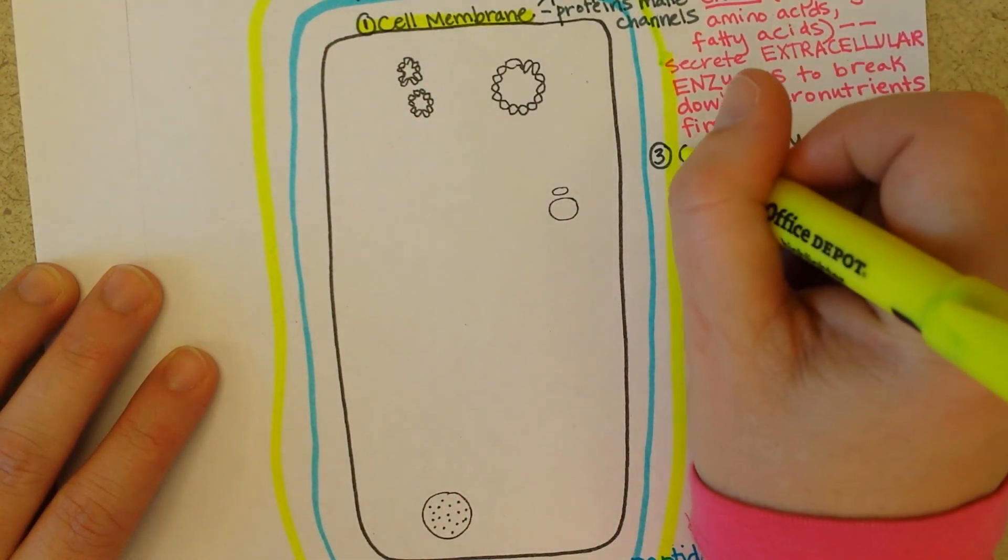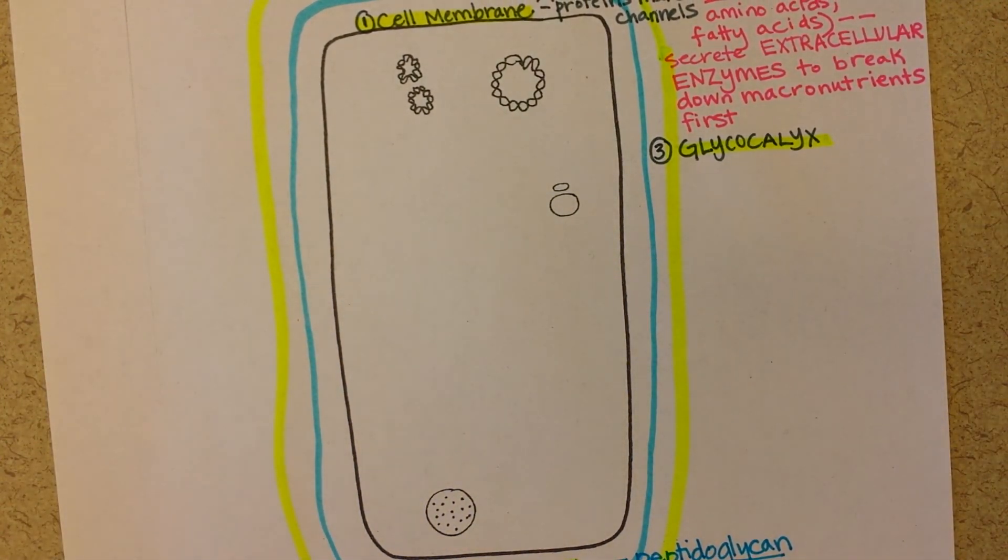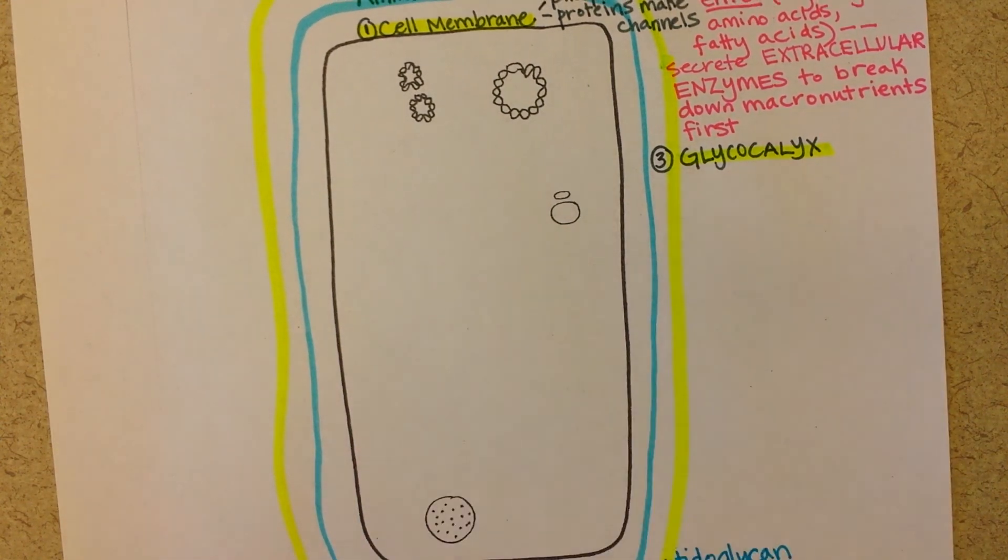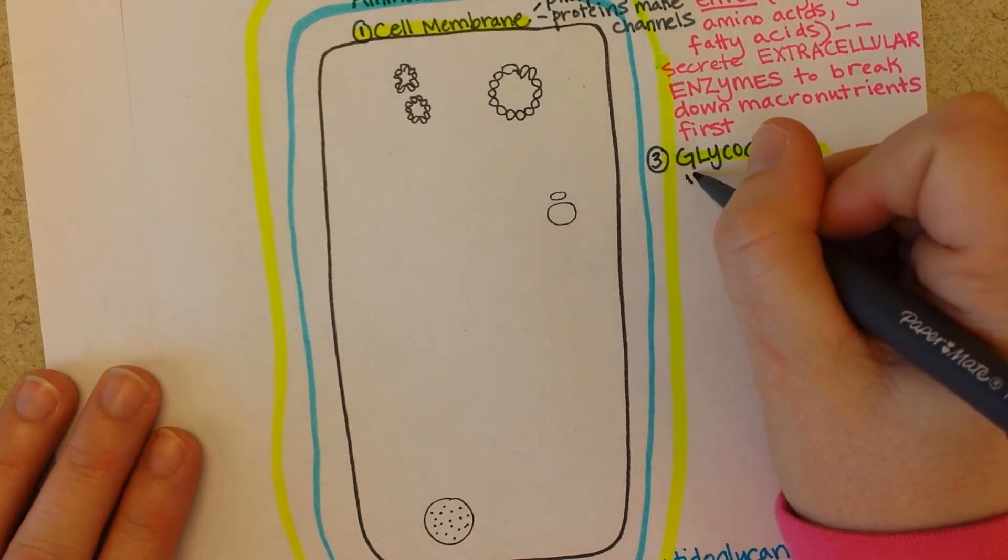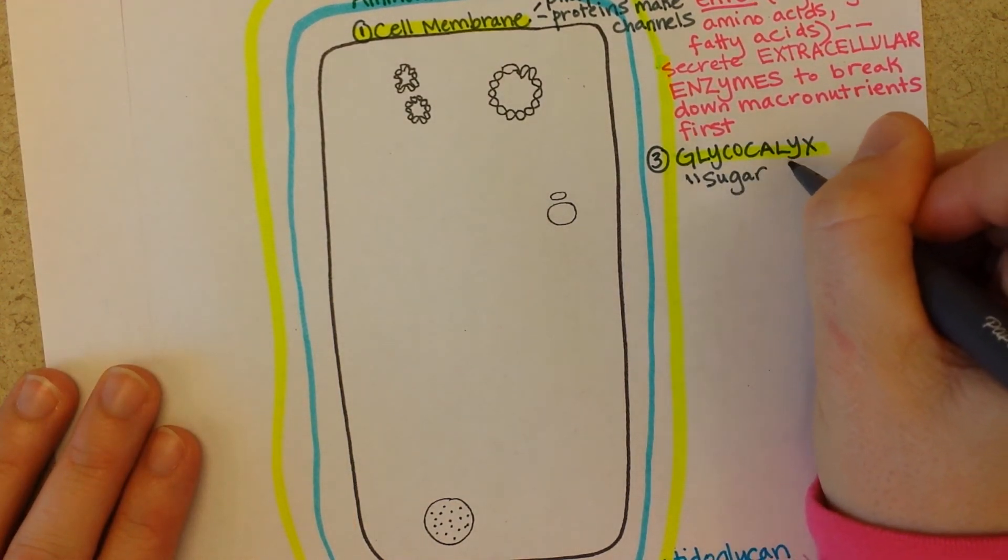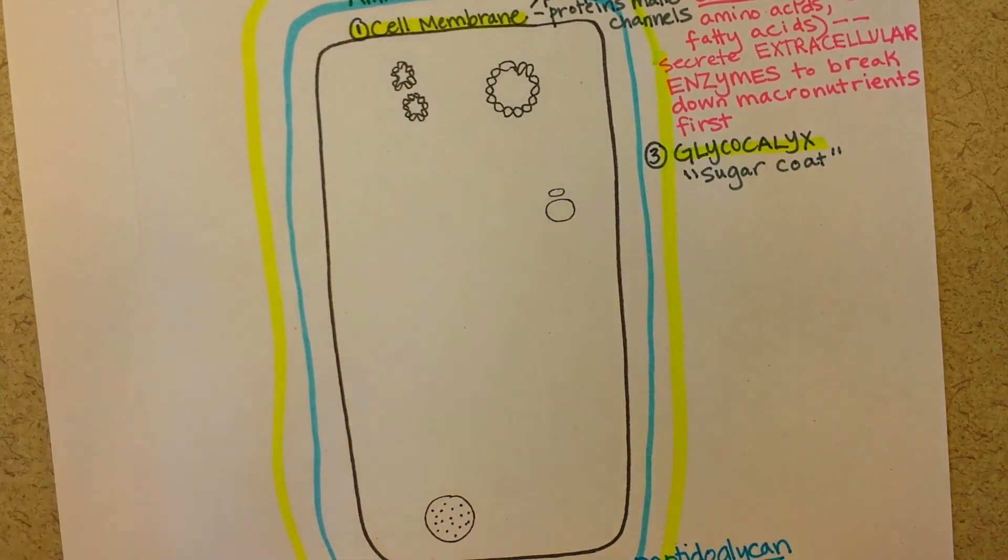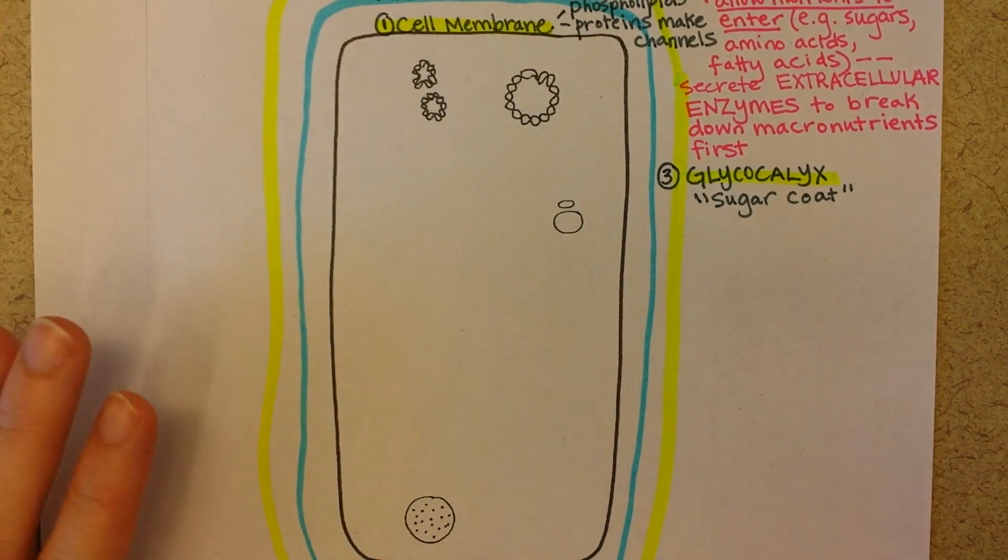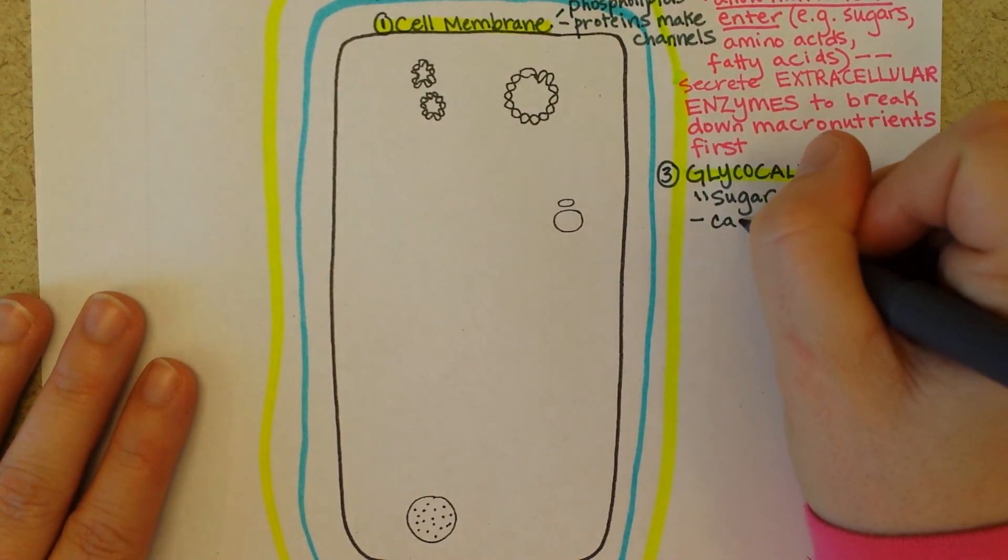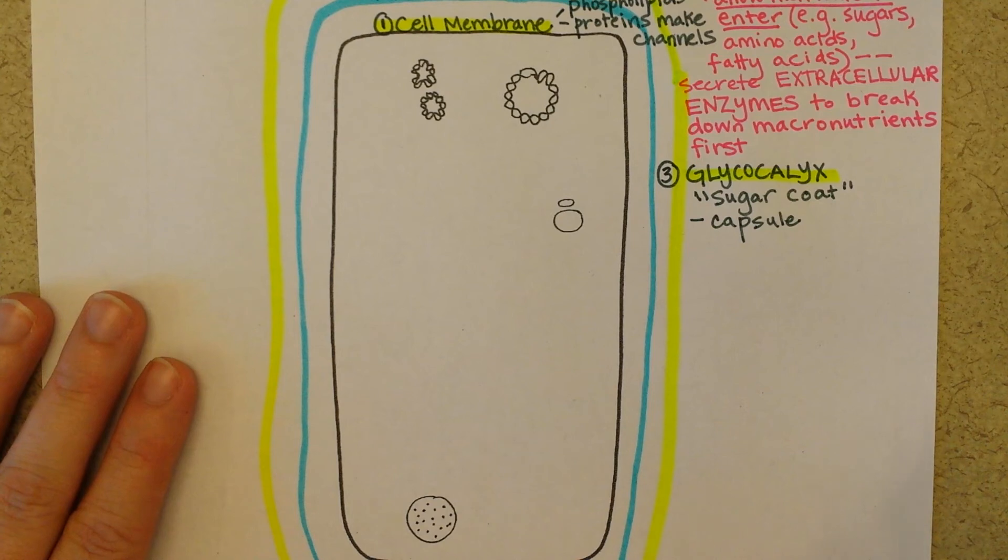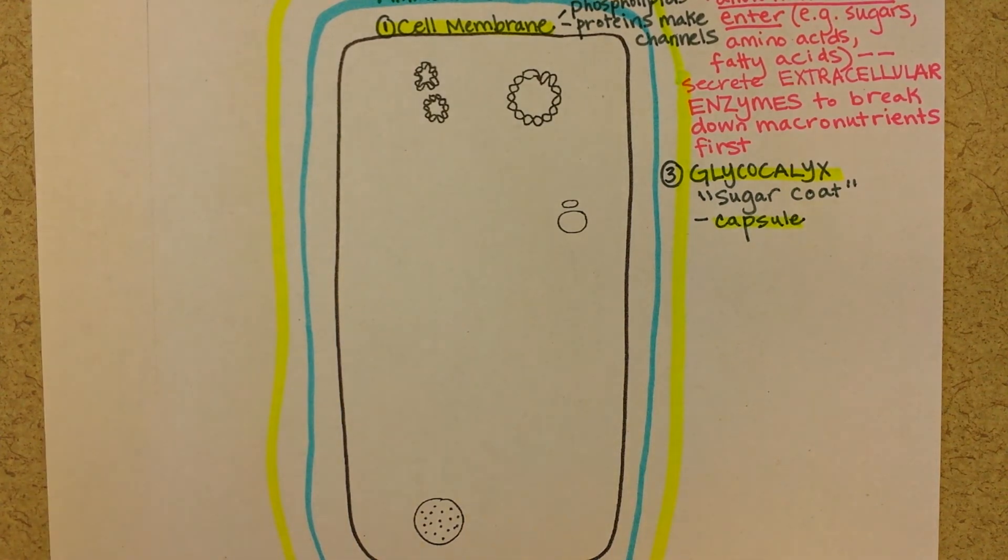Not all bacteria have a glycocalyx. I would say most of them do though, especially the ones that are good at making us sick and giving us cavities. Because the glycocalyx often helps them stick to different parts of our body. So, you can see in the name, it literally just means sugar and calyx means coat. So, sugar coat. And so, it's sticky and kind of slimy even. If it is really strongly adhered to the cell wall, then it's called a capsule.